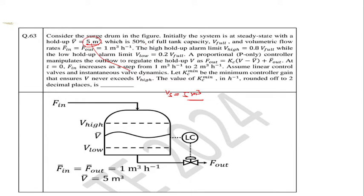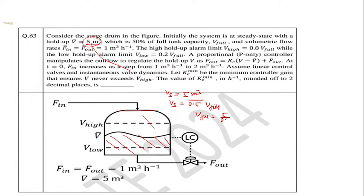And this is 50% of the full tank capacity. So this volume of 5 meter cube is only 50% of V_full. So how much is V_full? V_full means the total container volume. So V_full is 5 divided by 0.5, which is 10 meter cube.